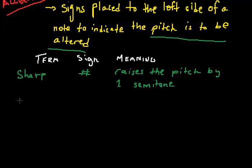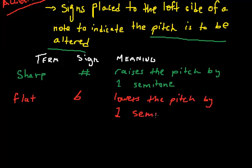The next one is a flat. The sign for that would be sort of a B looking thing. And this does the exact opposite, so it lowers the pitch by one semitone.